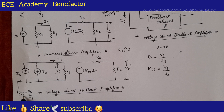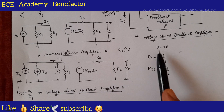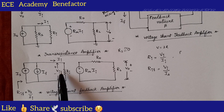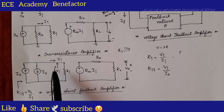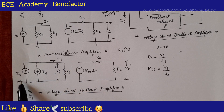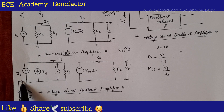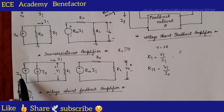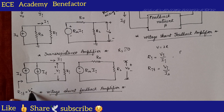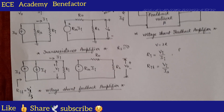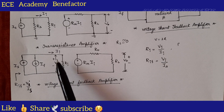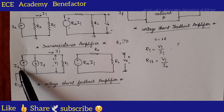R-IF is the input resistance with feedback — the input resistance of the voltage shunt feedback amplifier. By Ohm's law, resistance R equals V by I. Here R-i equals V-i by I-i. Looking from the input, the total input resistance with feedback R-IF equals V-i by I-s.